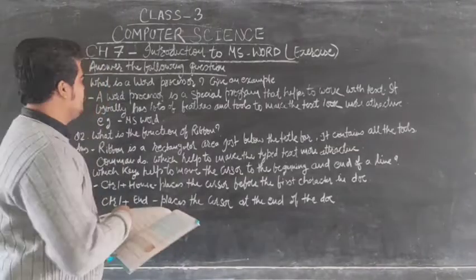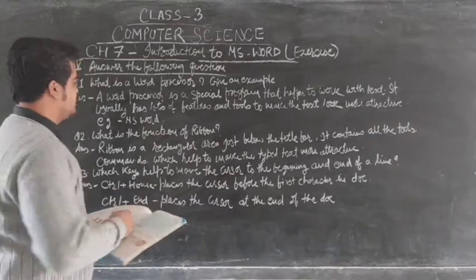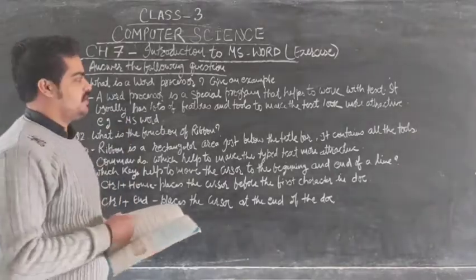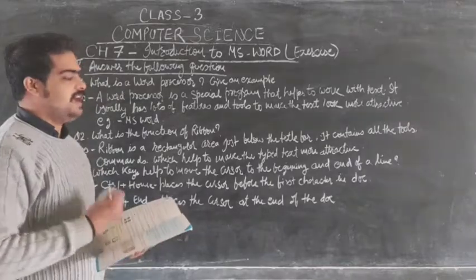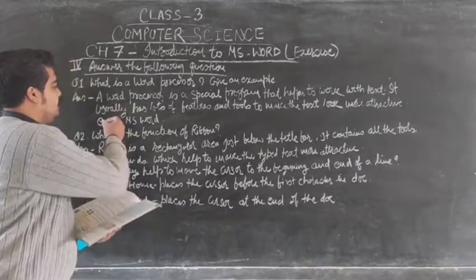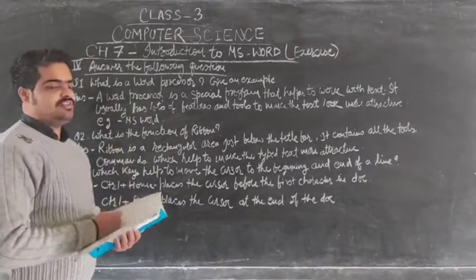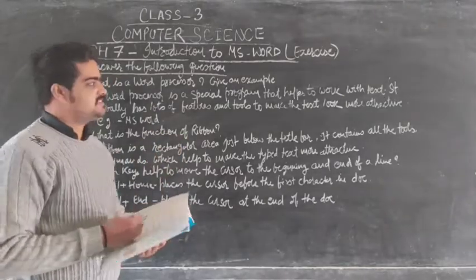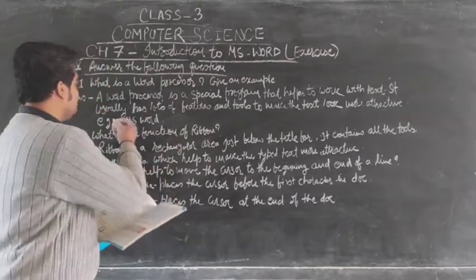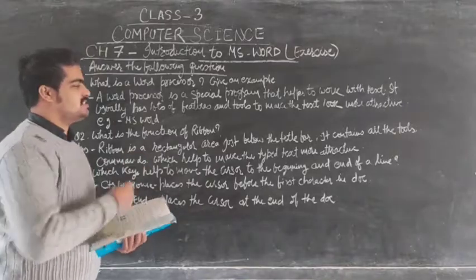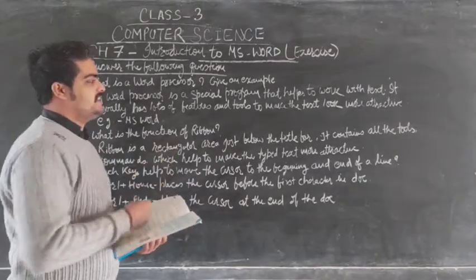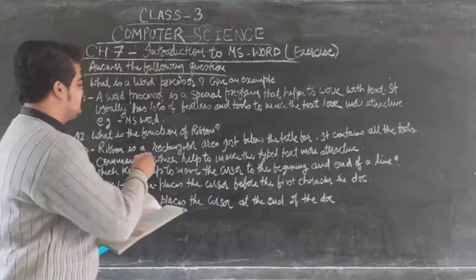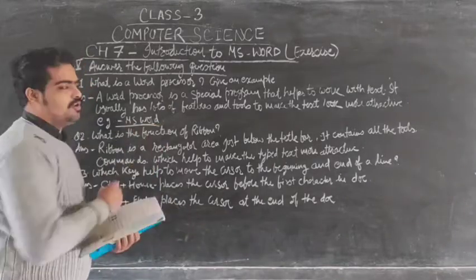Now question 4: answer the following questions. Question one — what is a word processor? Give an example. A word processor is a special program that helps to work with text, and it usually has lots of features and tools to make the text look more attractive. An example is MS Word.